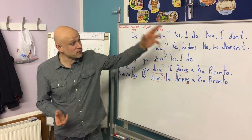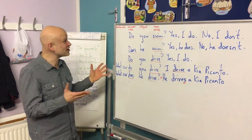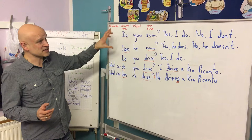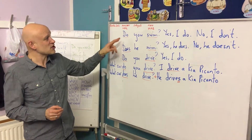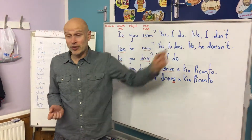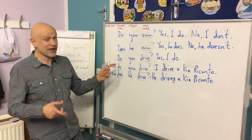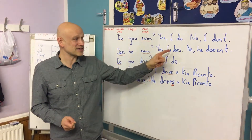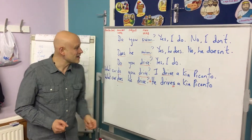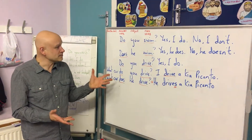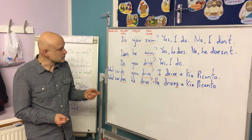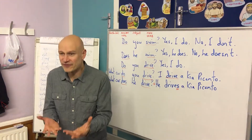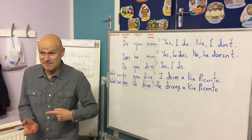But you came up with some really good examples. We started with yes/no questions: 'Do you swim?' — 'Yes, I do' or 'No, I don't.' And then we asked the third person: 'Does he swim?' — 'Yes, he does' or 'No, he doesn't.' Then in the next question we wanted more information — and this is the key today.